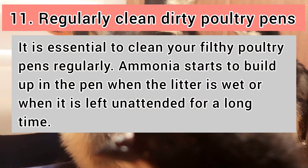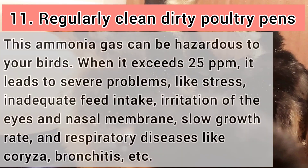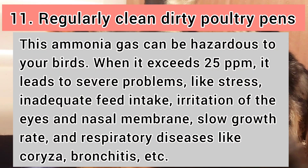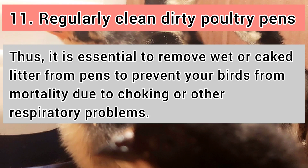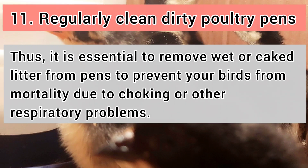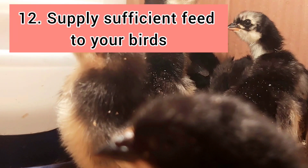Number eleven: regularly clean dirty poultry pens. Ammonia starts to build up when litter is wet or left unattended for a long time. When ammonia exceeds 25 ppm, it leads to severe problems like stress, inadequate feed intake, irritation of the eyes and nasal membrane, slow growth rate, and respiratory diseases like coryza and bronchitis. It is essential to remove wet or caked litter from pens to prevent mortality from choking or other respiratory problems.